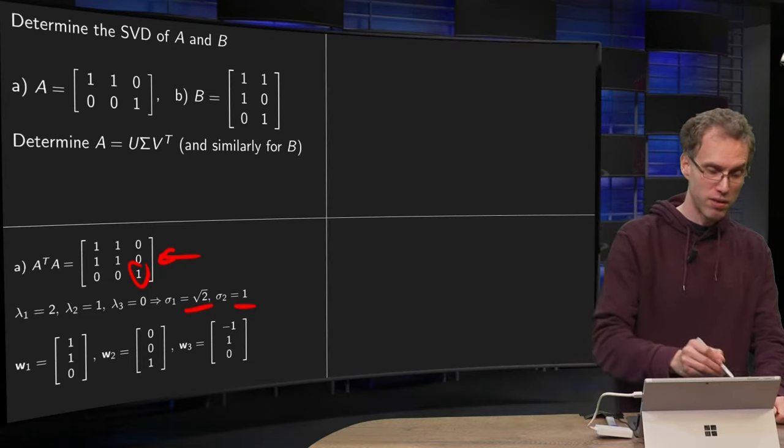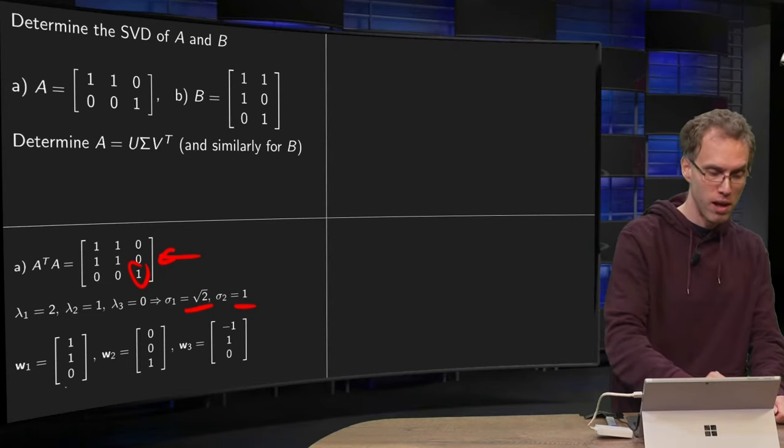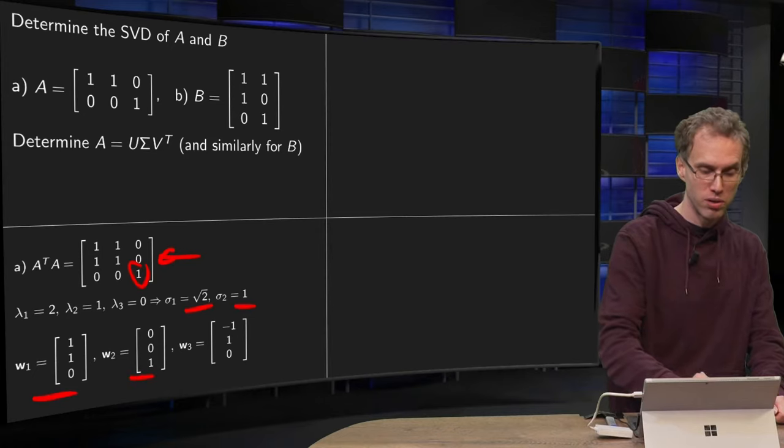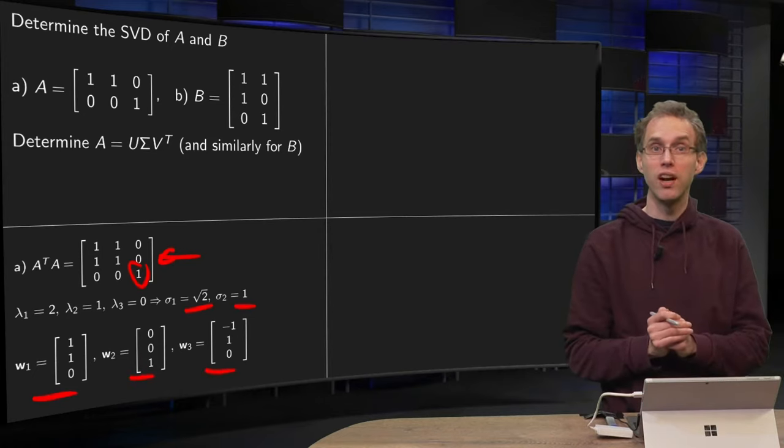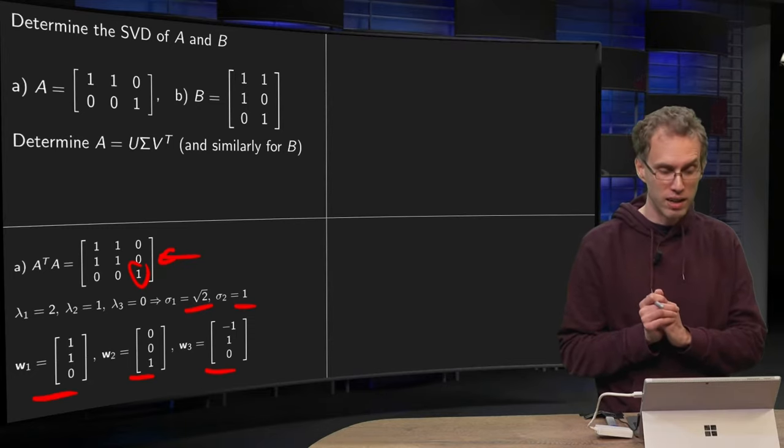Then you have to compute all the eigenvectors. So if you just compute eigenvectors without bothering about norms or whatever, you will get (1, 1, 0), (0, 0, 1), and (-1, 1, 0) for our three eigenvalues.